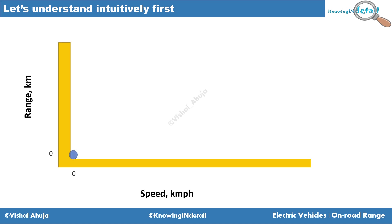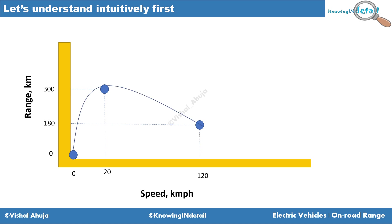Let's put these things on a graph. At 0 km/h speed your range is 0. At 20 km/h your range is 300 kilometers. At 120 km/h your range is 180 kilometers. So you see some kind of trend is being followed. Let's understand what is happening.